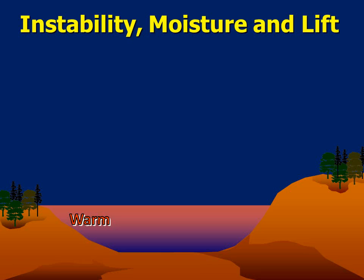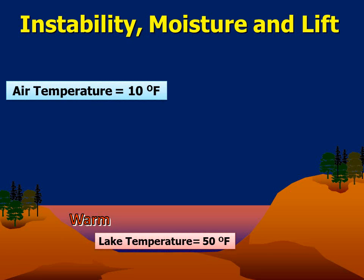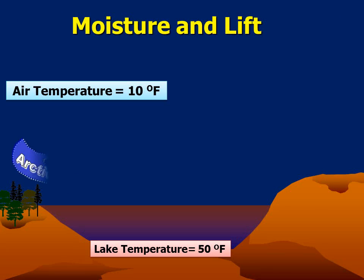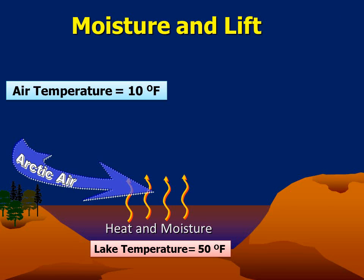Arctic air around 10 degrees Fahrenheit moving across warmer lakes around 50 degrees Fahrenheit created a large enough temperature difference to produce a very unstable atmosphere. As the cold, moist air sweeps over the warm water, it is heated from below, making it even more buoyant. The air quickly pulls moisture off the lake, saturating the air mass and prompting condensation. Clouds develop as the air becomes increasingly unstable, and then latent heat is released, providing more fuel and lift.